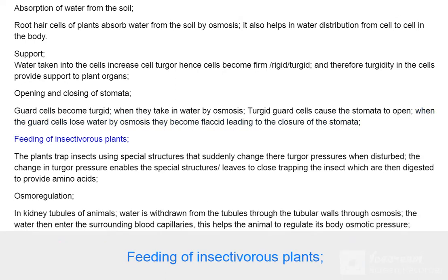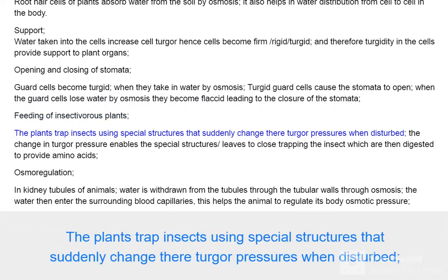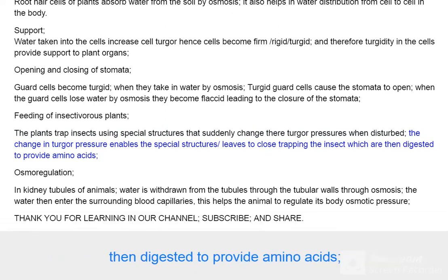Feeding of insectivorous plants: The plants trap insects using special structures that suddenly change their turgor pressures when disturbed. The change in turgor pressure enables the special structures or leaves to close, trapping the insect, which are then digested to provide amino acids.